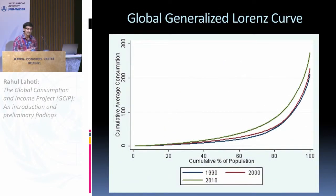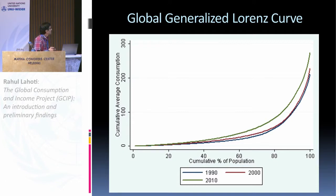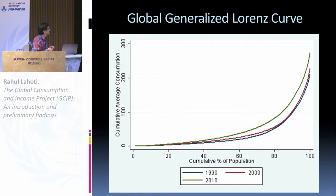These are the global generalized Lorenz curves — Lorenz curves scaled up by the means, with welfare implications. Here you will find that 2010 clearly dominates 1990 and 2000, meaning everyone in 2010 is better off at least in the consumption sense. 2000 barely dominates 1990.